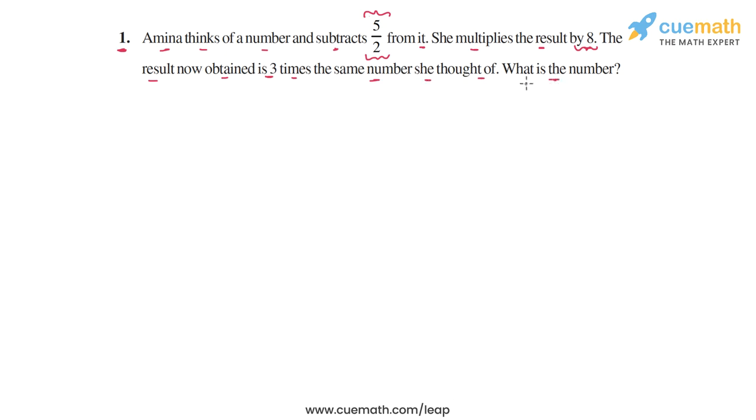This problem statement may look a little bit complicated when you read it at first, but the secret is to analyze it in parts, step by step carefully, and then set up an equation in terms of the unknown. The unknown is the number that we have to find, and then solve the equation to find that number.